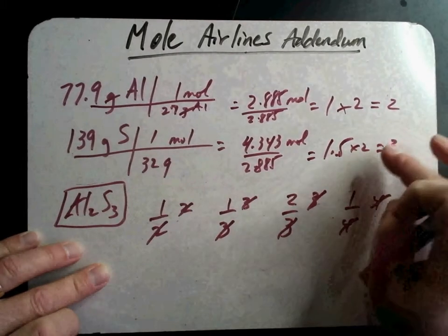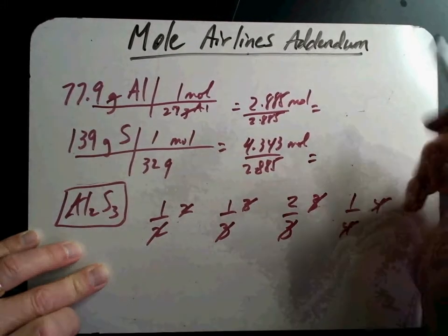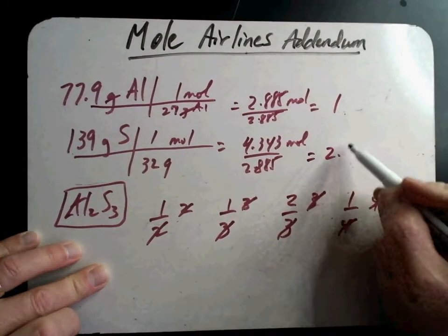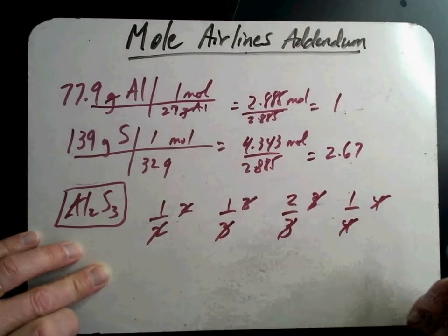But let's pretend for a minute that I don't get those numbers. And so let's say I got a 1 here and a 2.67. Okay, making up the math, 1 and 2.67, do I just round that up? No.